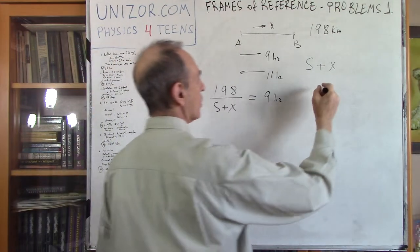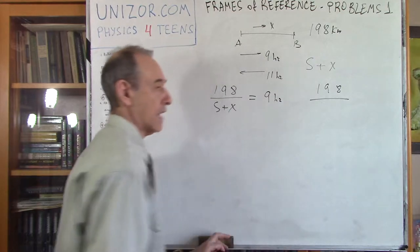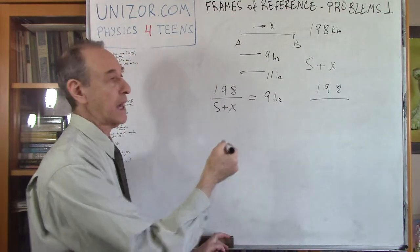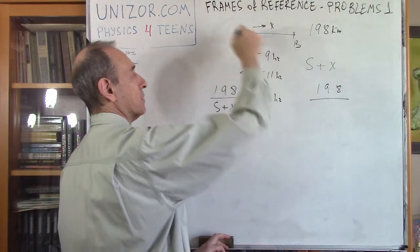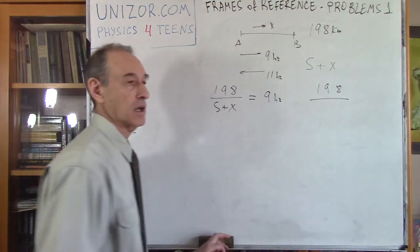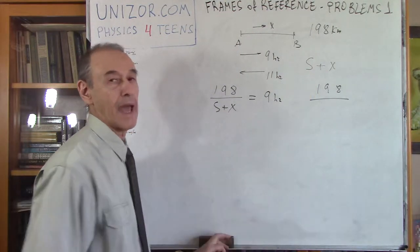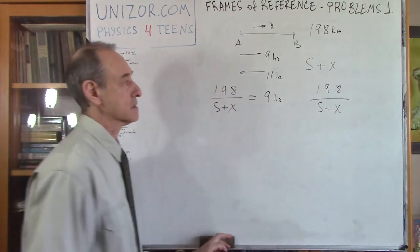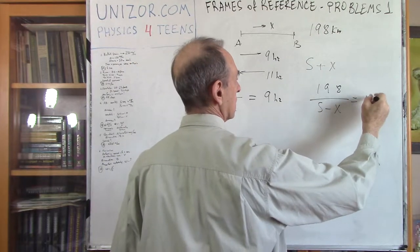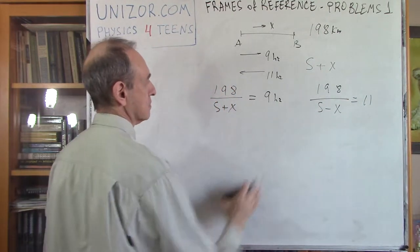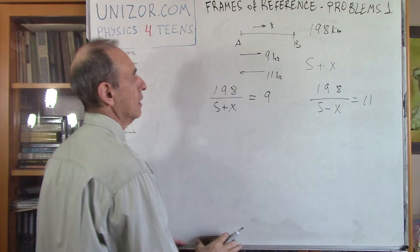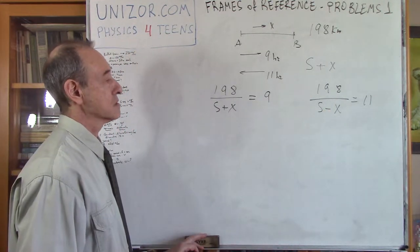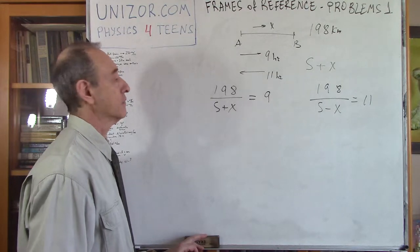Whenever it goes in the opposite direction, every hour the engine pulls it by s kilometers but the river flow pushes back by x, so the total speed would be s minus x — and that trip takes 11 hours. All I have to do is solve this system of two equations with two unknowns.